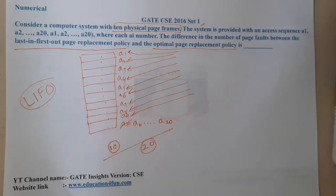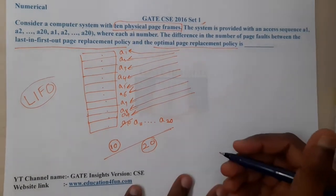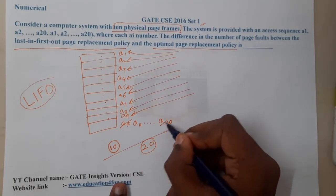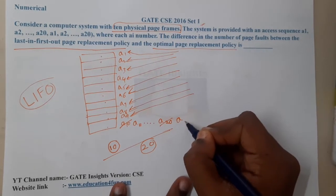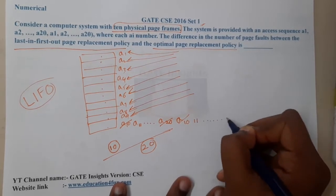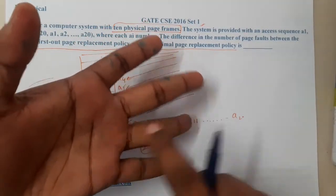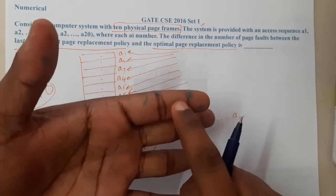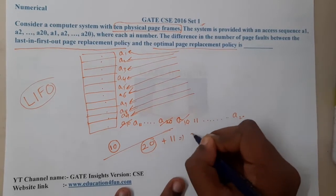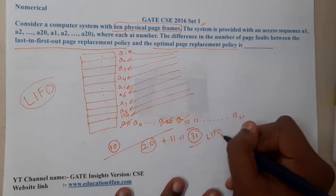Among all pages in the frames, a20 came last. So we replace a20 with a10, then replace a10 with a11, and continue this way from a10 through a20 — that is 11 additional faults. So the total faults for LIFO = 20 + 11 = 31.